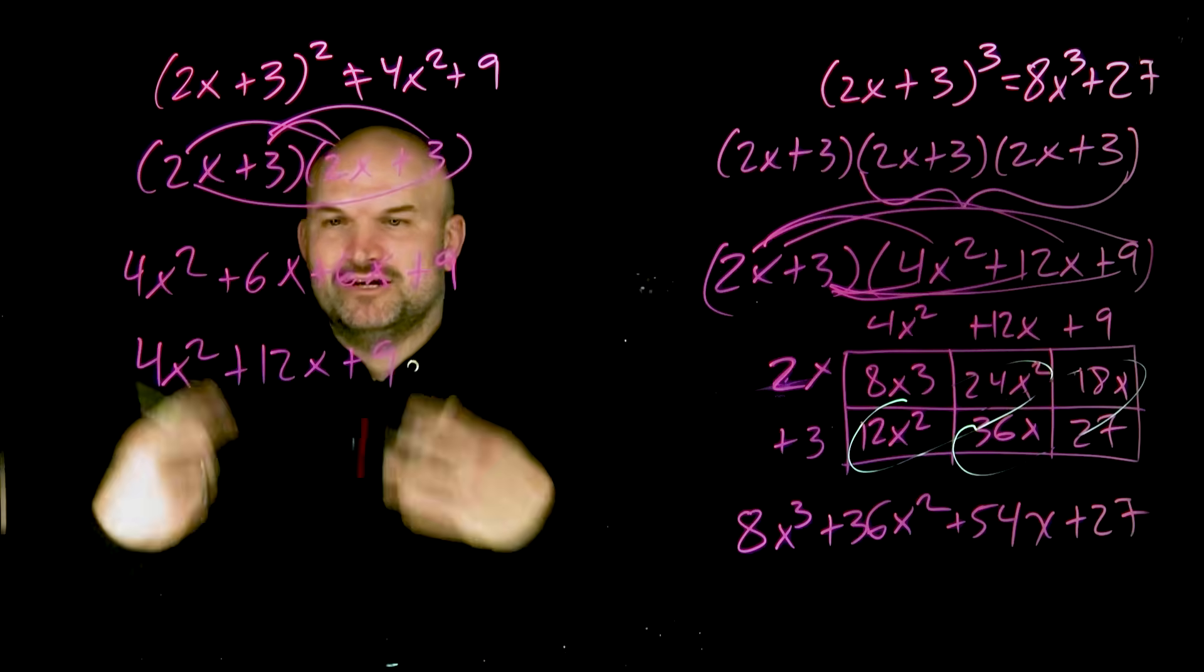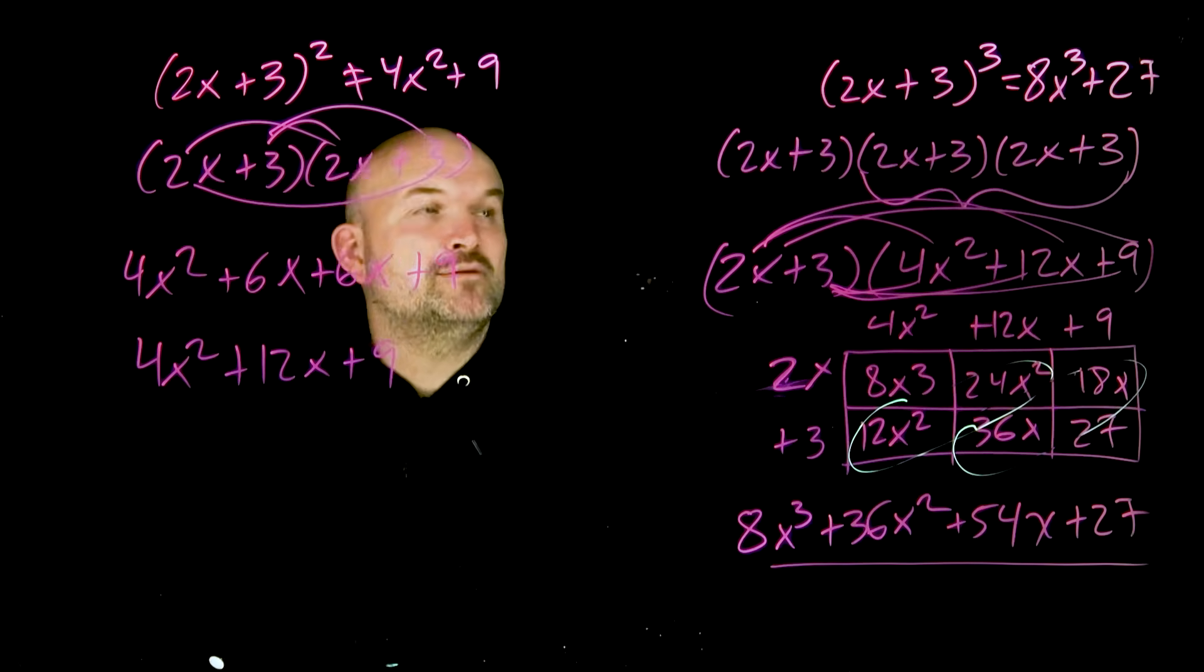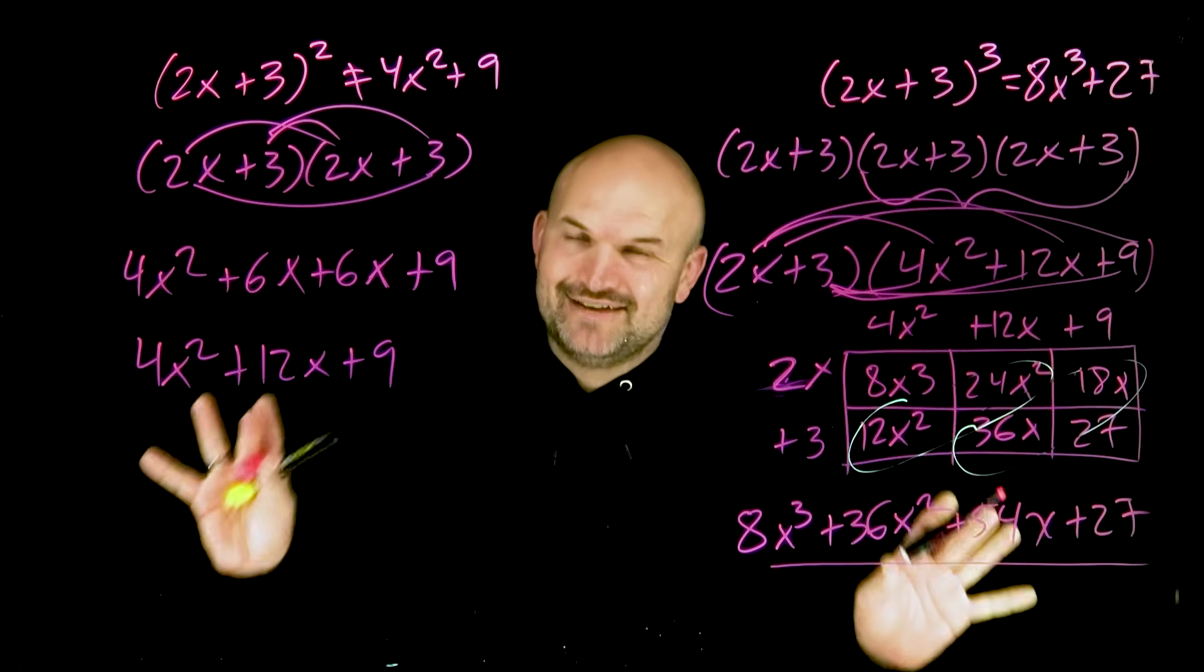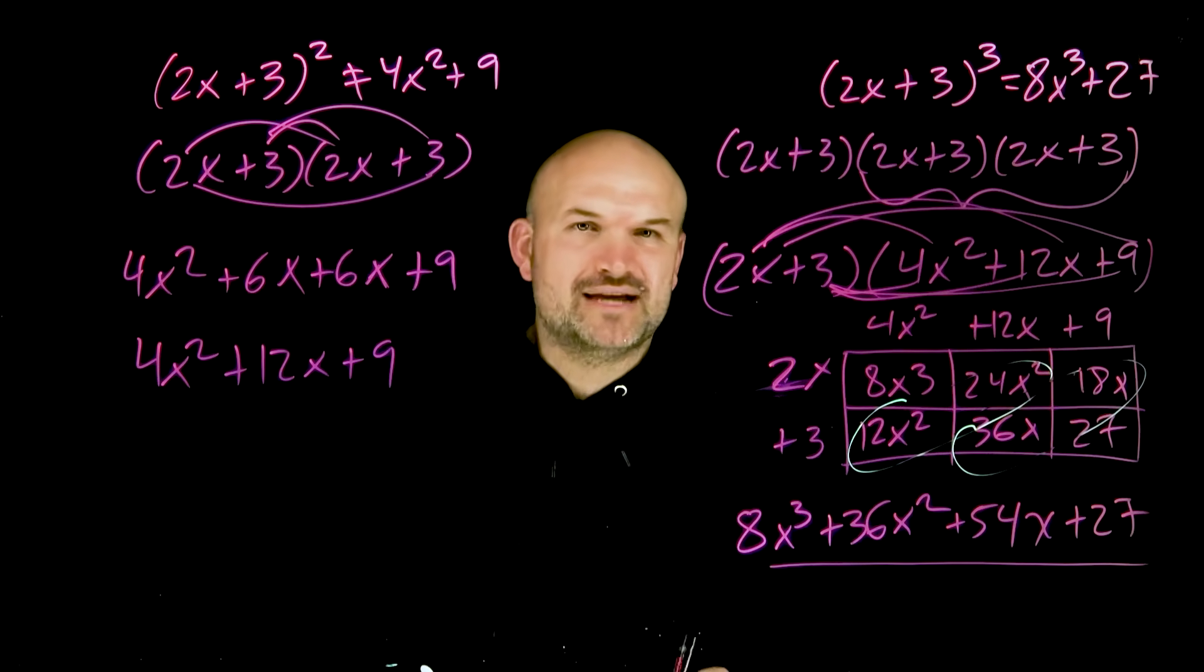So a binomial times a binomial gives me a trinomial. And you can see here, a binomial cubed is now going to give me a polynomial with four terms. That's the difference the long way. Again, if you want to see the shortened way, check out the video down below. Cheers.